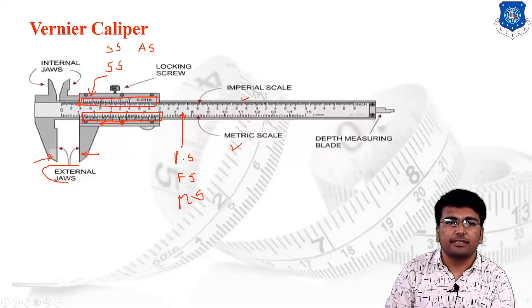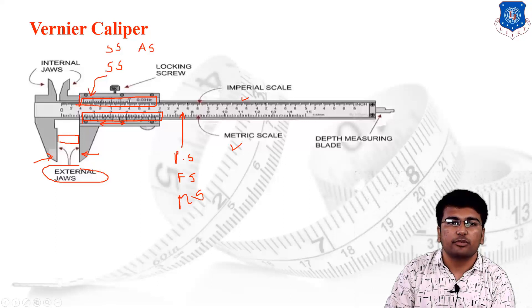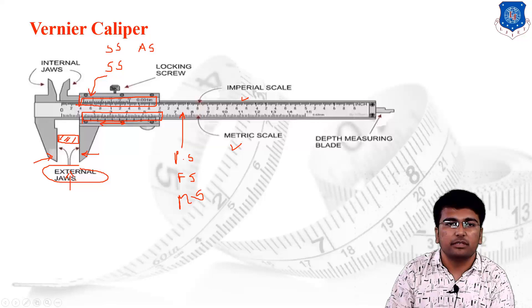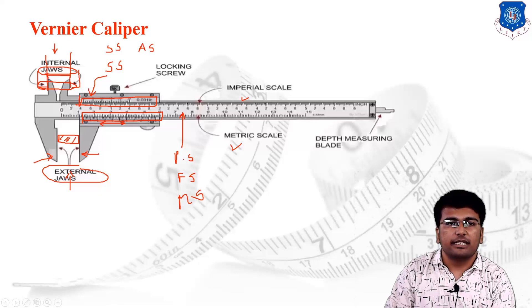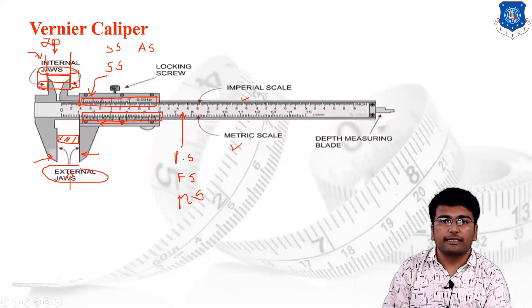Two external jaws are provided. As the name suggests, external jaws are useful for measuring external dimensions — for example, measuring the external dimensions of a rectangular block. Two internal jaws are also provided. If you have to measure the internal diameter of a cylinder, you simply insert the internal jaws into the cylinder and measure. So jaws used for measuring internal dimensions are called internal jaws.